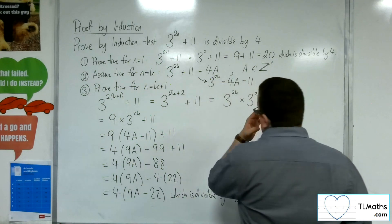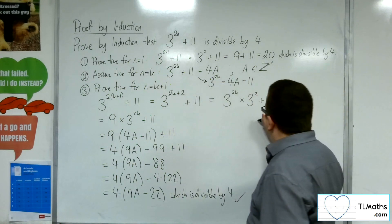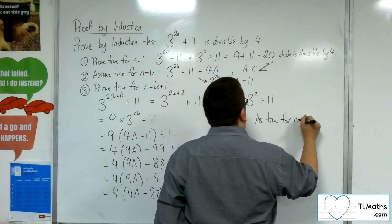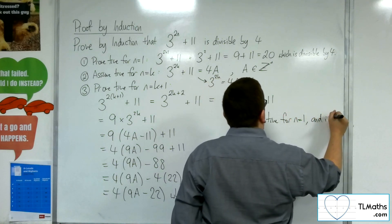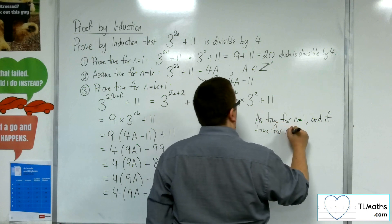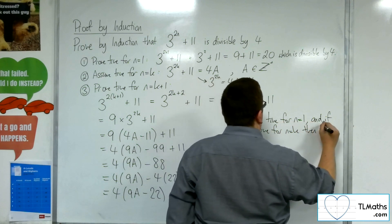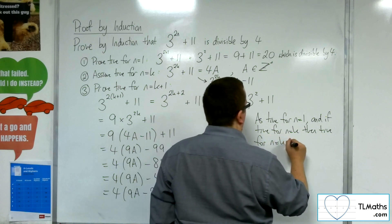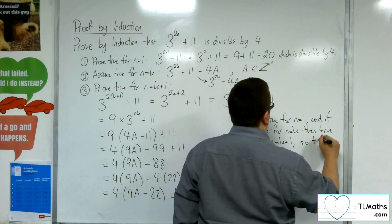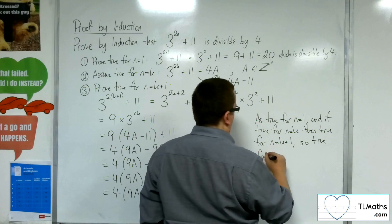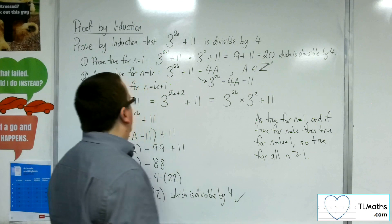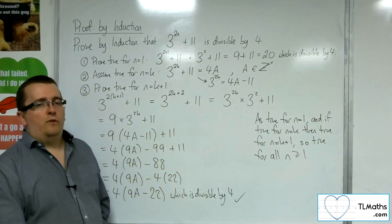And so we go to our concluding statement. So as true for n equals 1, and if true for n equals k, then true for n equals k plus 1. And so true for all n, all natural numbers n, greater than or equal to 1. And that is our proof.